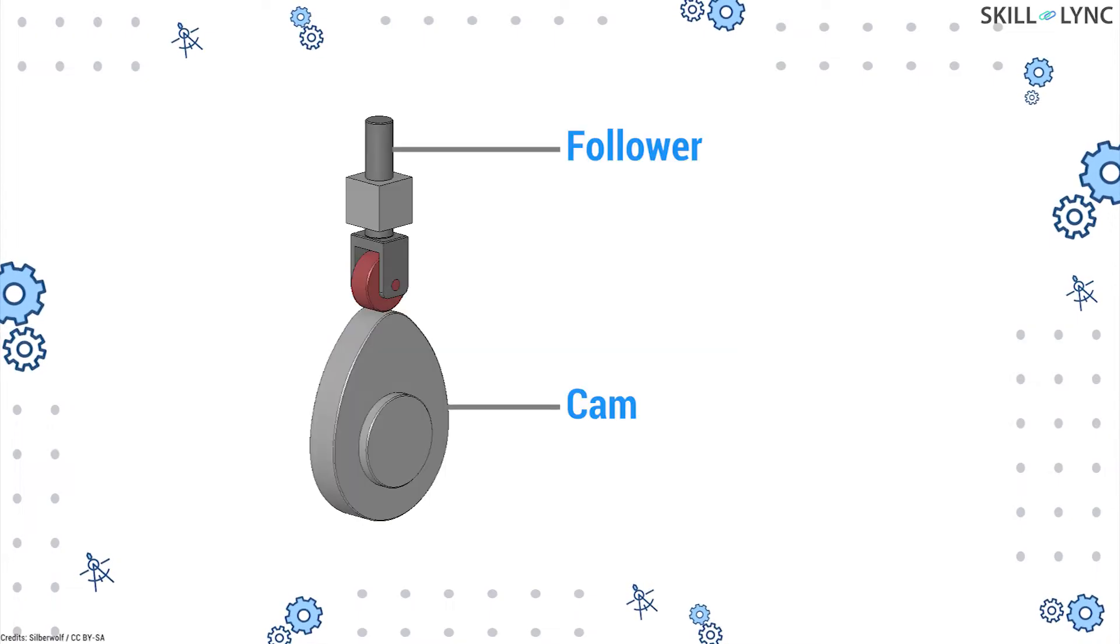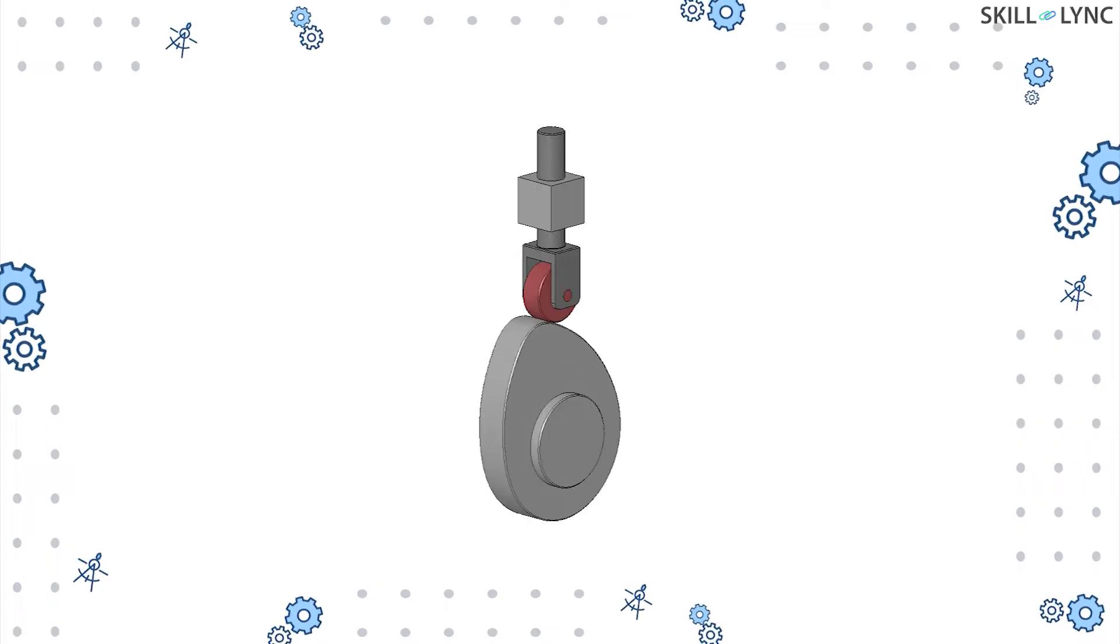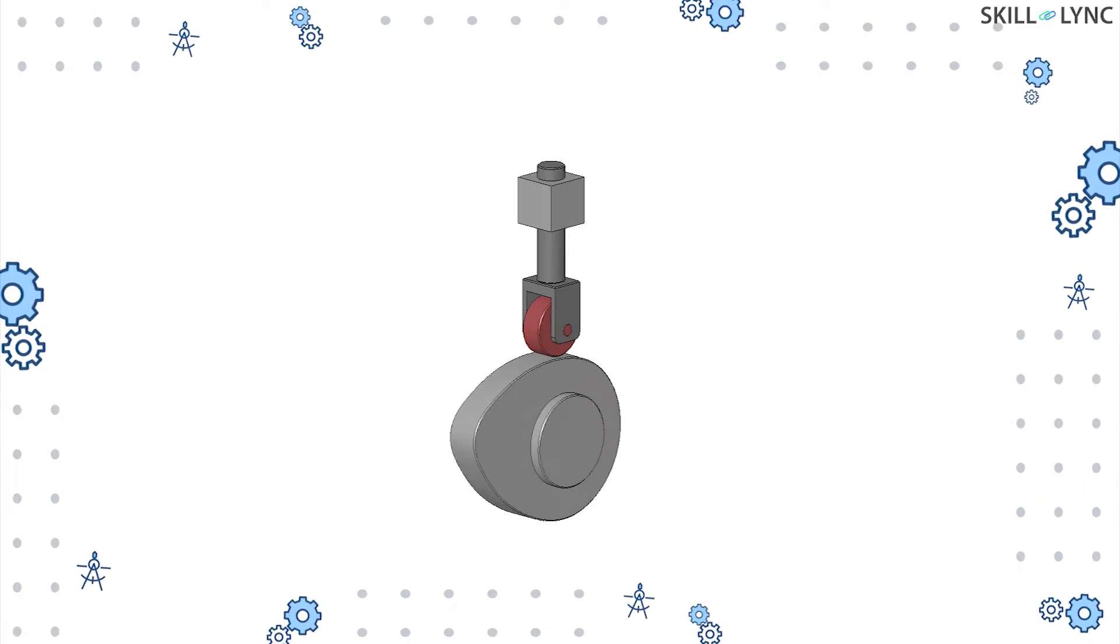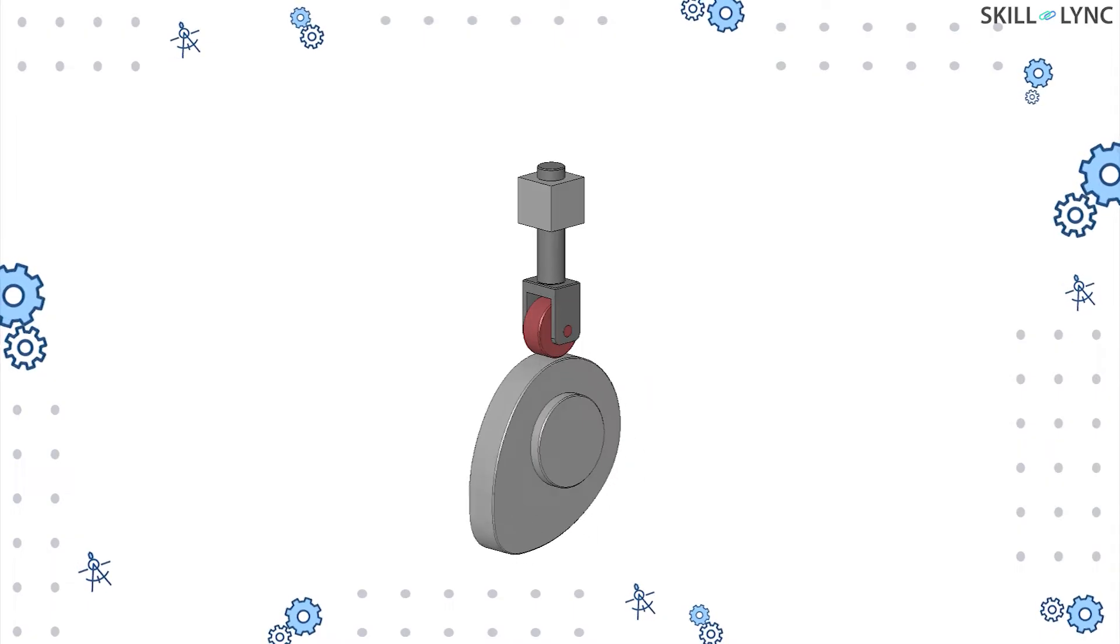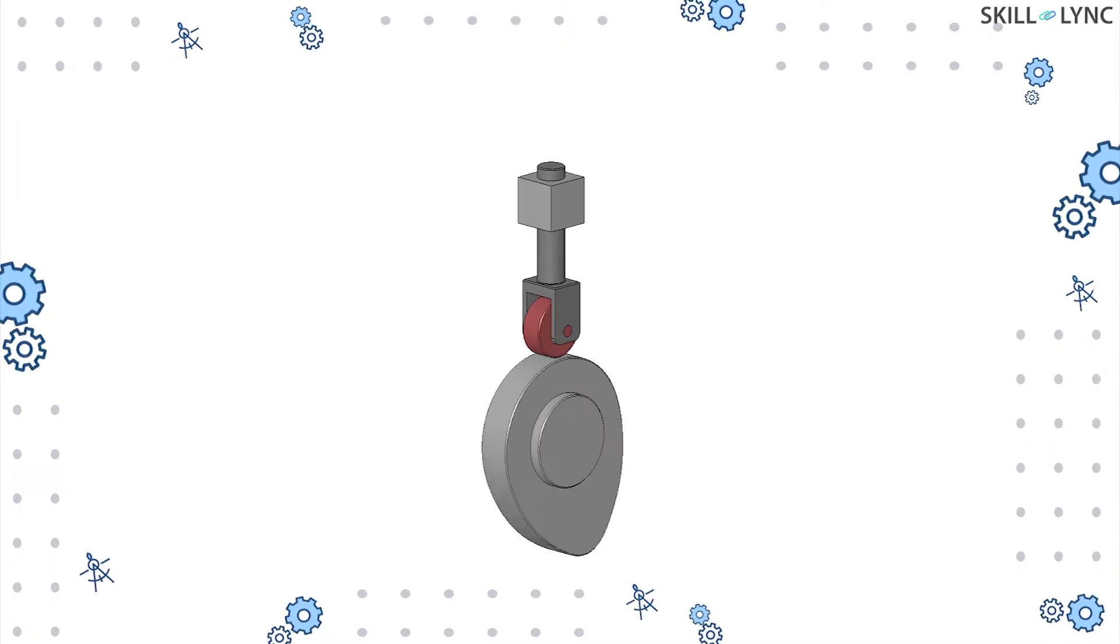The follower is placed on the cam and the profile of the cam is designed in such a way to achieve the desired motion. As the cam rotates, its varying cross-section makes the follower reciprocate. This is how the mechanism works.